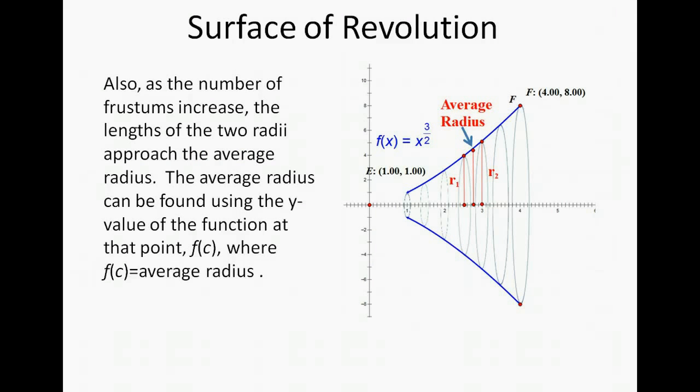Also as the number of frustums increase the lengths of the two radii approach the average radius length. The average radius length can be found by using the y coordinate at that particular point.